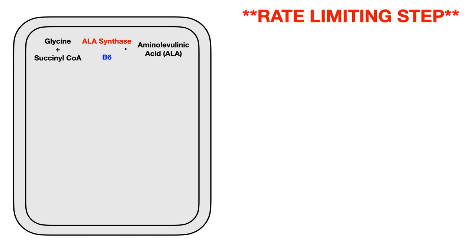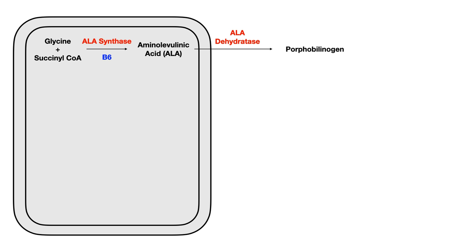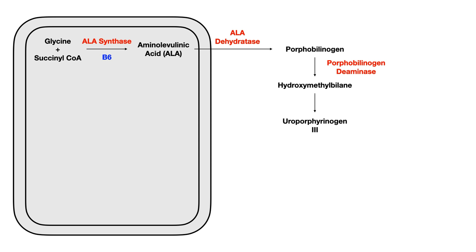Aminolevulinic acid leaves the mitochondria and enters the cytosol, where it gets converted to porphobilinogen by ALA dehydratase. Porphobilinogen then gets converted to hydroxymethylbilane by porphobilinogen deaminase. Hydroxymethylbilane gets converted to uroporphyrinogen 3 — I don't care that you know this enzyme step, as I'll explain shortly. Uroporphyrinogen 3 gets converted to coproporphyrinogen 3 by uroporphyrinogen decarboxylase.